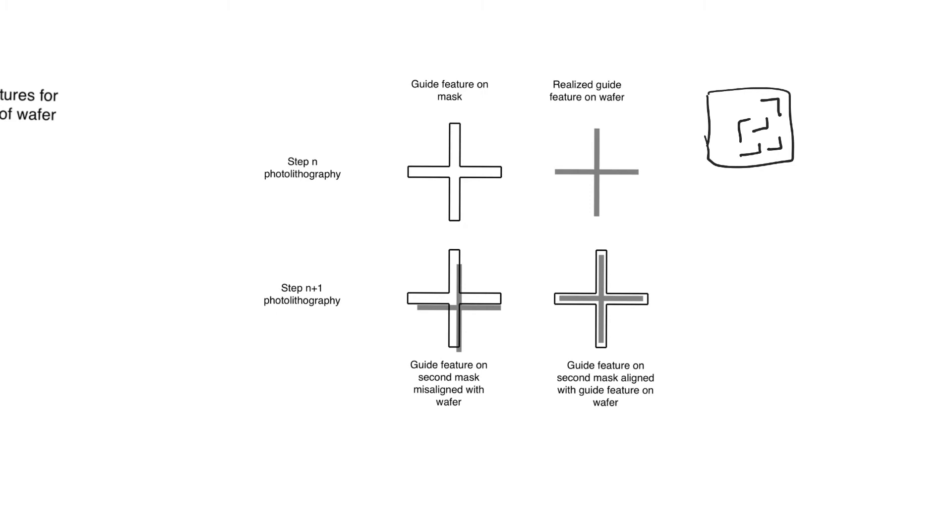So let's imagine that we are doing, for example, the polysilicon layer, which we will see is the layer we use to create MOSFET gates. Then it will contain a drawing of all the MOSFET gates in all the locations on the chip.